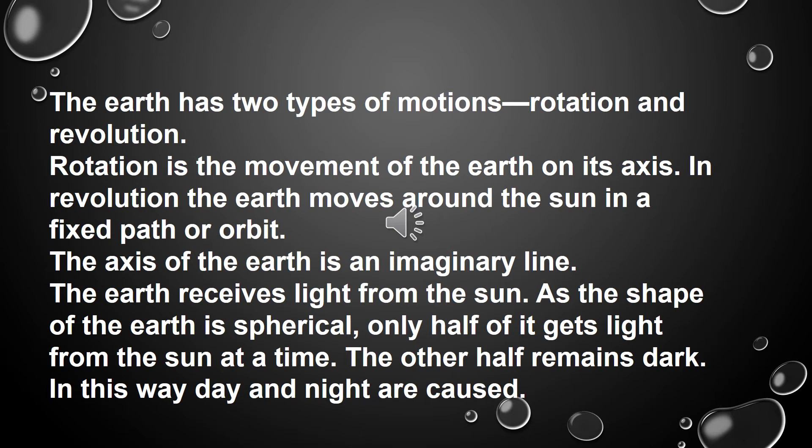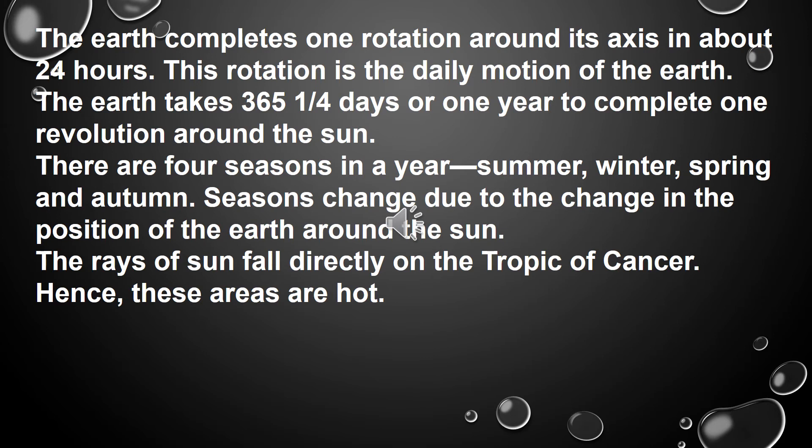The axis of the earth is an imaginary line. The earth receives light from the sun; as the shape of the earth is spherical, only half of it gets light from the sun at a time. The other half remains dark, and in this way day and night are caused. The earth completes one rotation around its axis in about 24 hours. This rotation is the daily motion of the earth. The earth takes 365 and a half days, or one year, to complete one revolution around the sun.